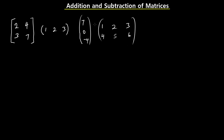In matrices, we refer to the line that runs horizontally as the row, and the line that runs vertically as the column. So we have rows and we have columns. We're going to be considering this in the following tutorials — looking at the concept of row and concept of column when we are numbering and naming our matrices.